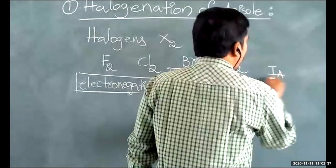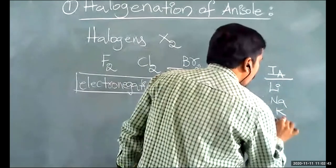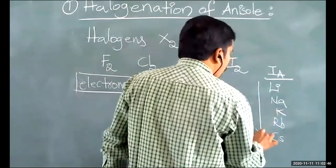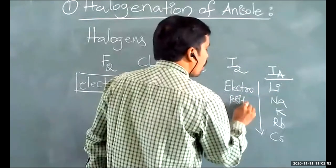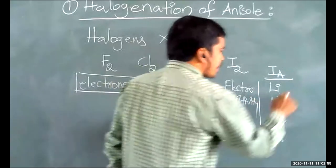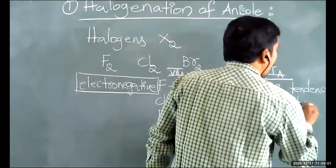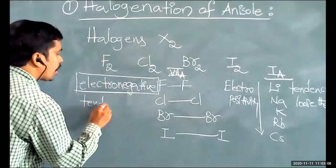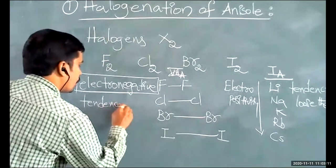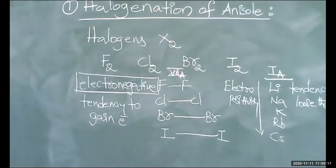In comparison, 1st A group elements (alkali metals: lithium, sodium, potassium, rubidium, cesium) are electropositive — they have a tendency to lose electrons. Electronegativity means tendency to gain electrons; electropositivity means tendency to lose electrons.